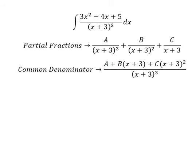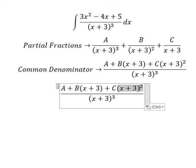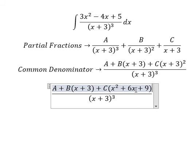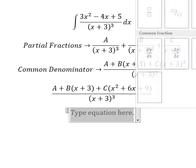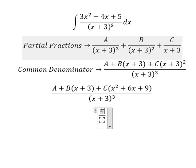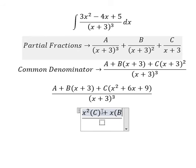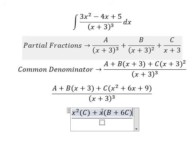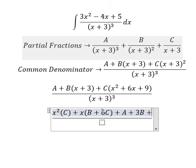Next we need to expand, then arrange based on the terms of x. For x², we have C. For x, we have B plus 6C. For the constant terms, we have A plus 3B plus 9C.